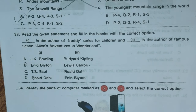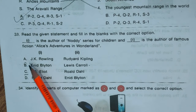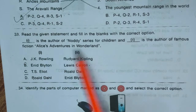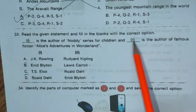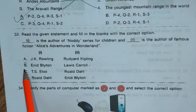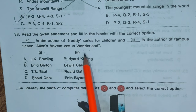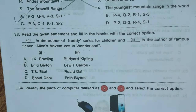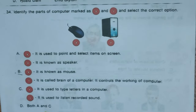Question 33: Read the given statements and fill in the blanks. Statement 1: Dash is the author of the Noddy series for children. Statement 2: Dash is the author of the famous fiction Alice's Adventures in Wonderland. Options: A) JK Rowling / Rudyard Kipling, B) Enid Blyton / Lewis Carroll, C) T.S. Eliot / Roald Dahl, D) Roald Dahl / Enid Blyton. Correct answer is B — Enid Blyton for the Noddy series and Lewis Carroll for Alice's Adventures in Wonderland.